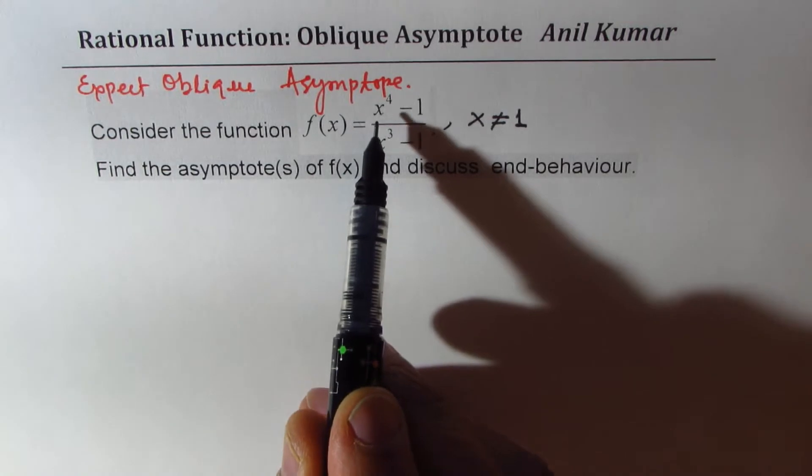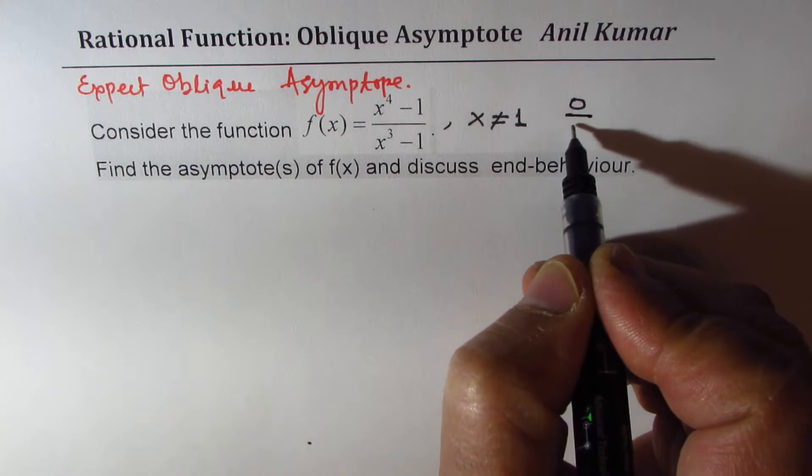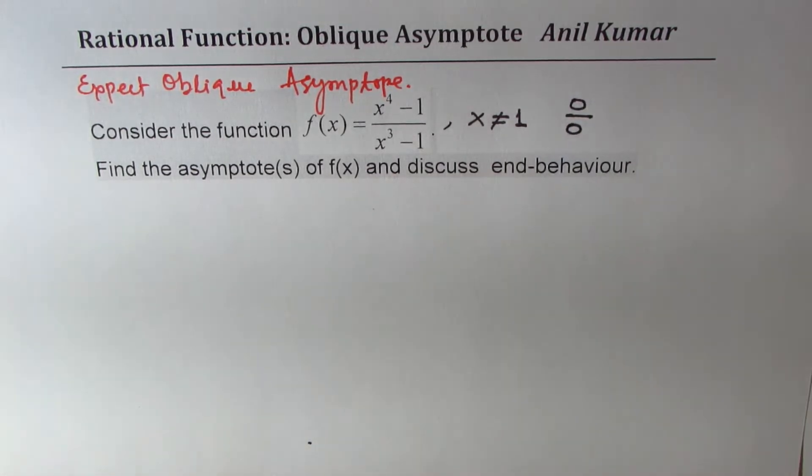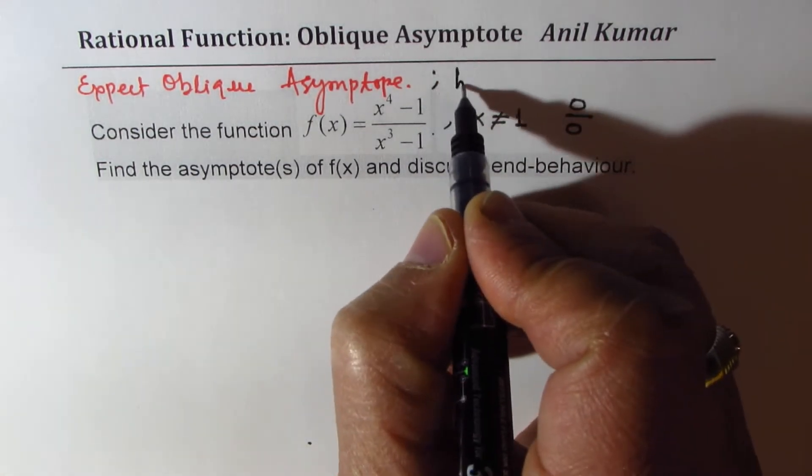Now, 1 is also a factor of the numerator. So if I substitute 1 here, I get 0 over 0, right? So that clearly indicates that we have a hole at 1.